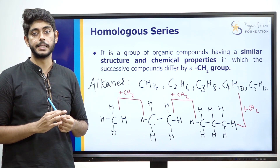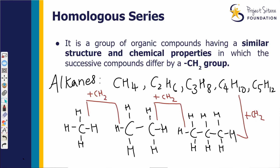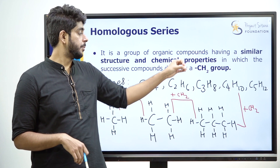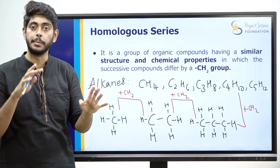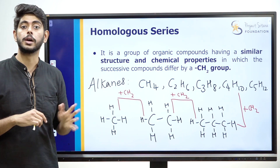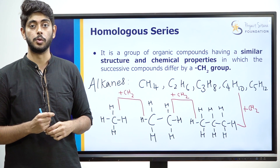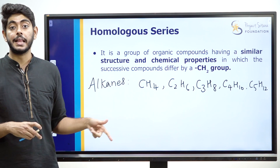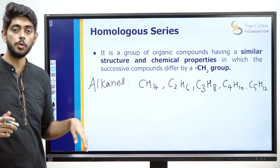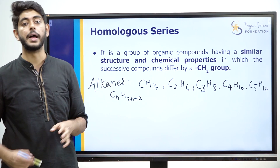This is the homologous series of alkanes — they have very similar properties. I will tell you the properties of alkanes: methane, ethane, heptane — all alkanes have similar properties. That is why we discuss homologous series. Each member differs by one CH2 group, which is why successive compounds differ by a CH2 group. The general formula for alkanes is CnH2n+2, and this is the homologous series of alkanes.